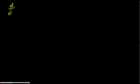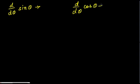Before we start, the only derivatives you need to remember are the derivative of sin theta and the derivative of cos theta. The derivative of sin theta is cos theta, and the derivative of cos theta is negative sin theta. These are pretty easy to remember. Just look at them and you will remember. For the rest of the trigonometric functions, there's a little trick.